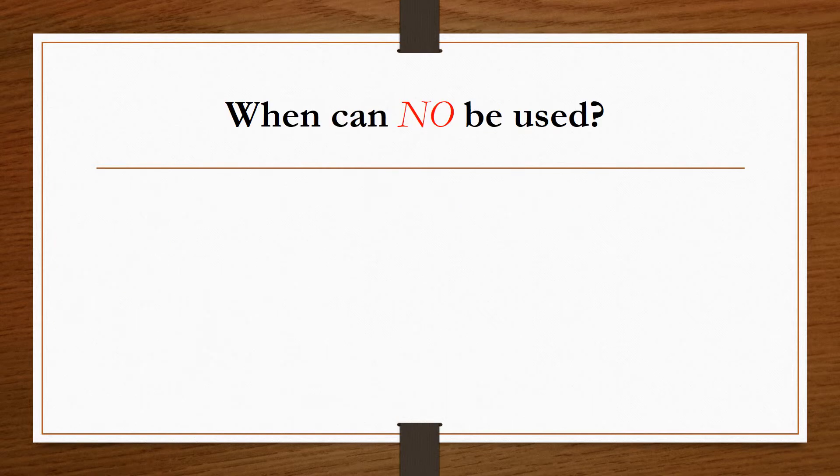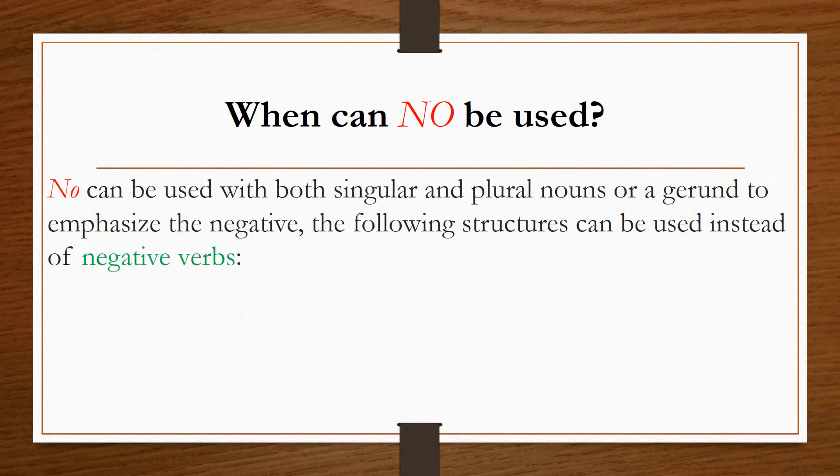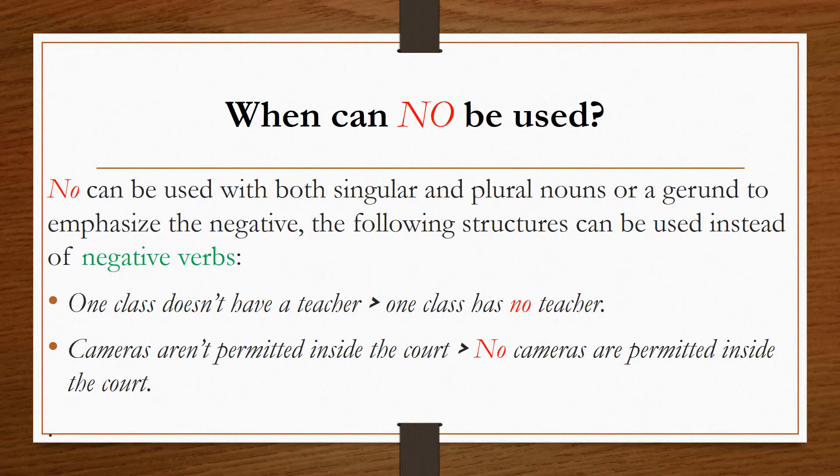When can no be used? No can be used with both singular and plural nouns or a gerund to emphasize the negative. The following structures can be used instead of negative verbs. So instead of saying one class doesn't have a teacher, you can say one class has no teacher.